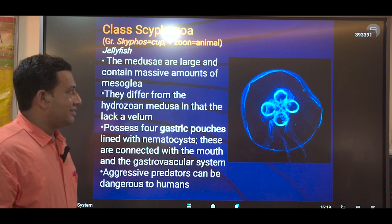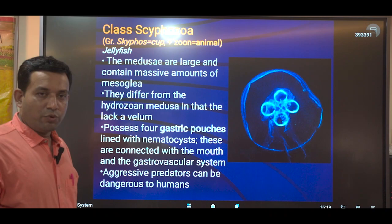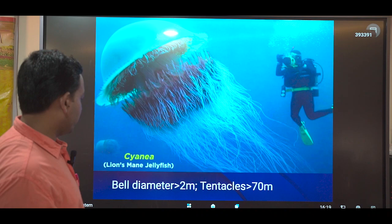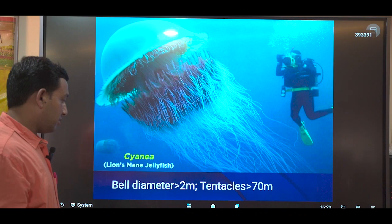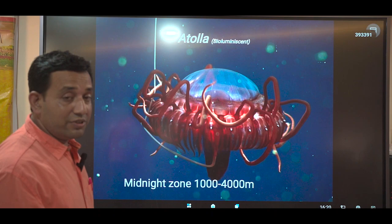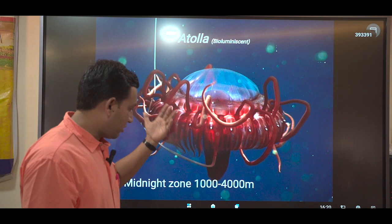Characteristics of Scyphozoa include the umbrella-shaped medusa, a thick amount of mesoglia, four gastric pouches, and a downwardly directed manubrium. The lion's mane jellyfish has a diameter of about 2 meters and tentacles extending up to 70 meters in marine water. Most cnidarians have the capability of bioluminescence, found even at the midnight zone, which is 1,000 to 4,000 meters below the sea surface.